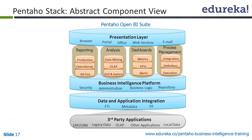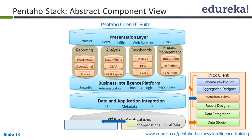Process management covers integration and execution of the process. The business intelligence platform handles security, administration, business logic, and repository. For data and application integration, ETL is the main part for the data integration plan. It can be built on any third-party application — like ERP, CRM, legacy database, OLAP, other applications, and local data like Excel and flat files.